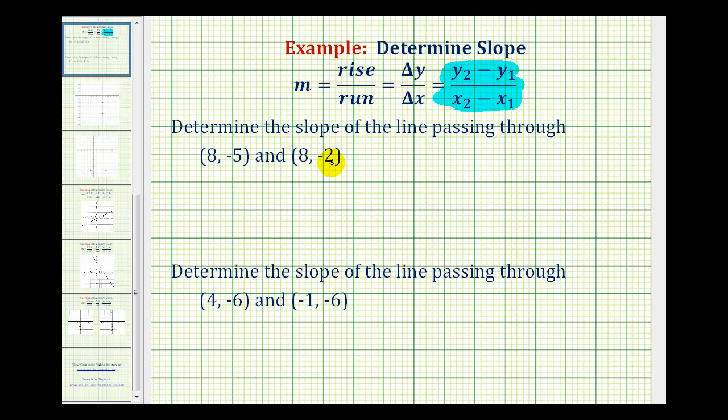For example, if we're given these two points here, we can call these coordinates the ones and these coordinates the twos. So this would be x₁, this would be y₁, and this would be x₂ and y₂. Now we can apply the slope formula.